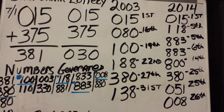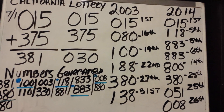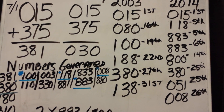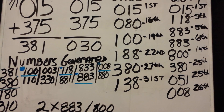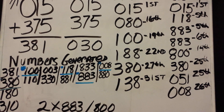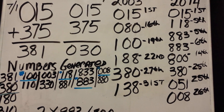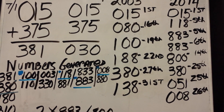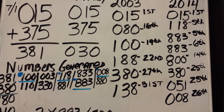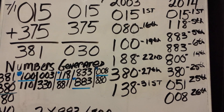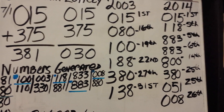800 fell on the fourteenth, 380 on the twenty-fifth, and 051 also fell on the twenty-fifth, followed by 008. As you can see, a lot of the same numbers generated from the original 015 that fell on the first of the month have fallen throughout July 2014.